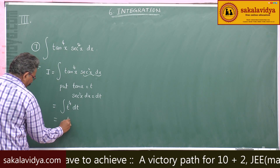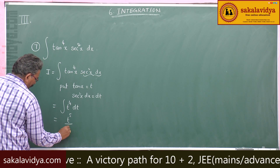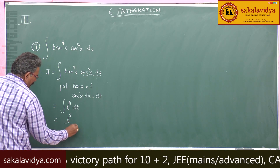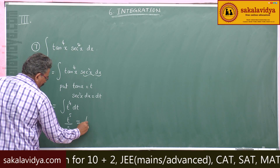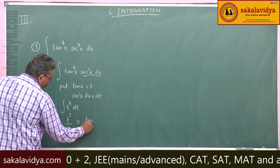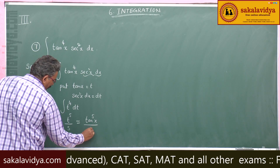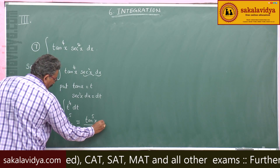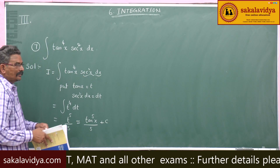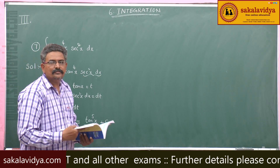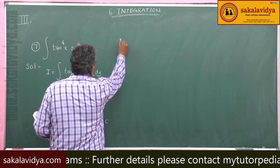This is t to the power of 4+1 divided by 4+1, where t stands for tan x. So the answer is tan⁵x divided by 5 plus constant of integration.